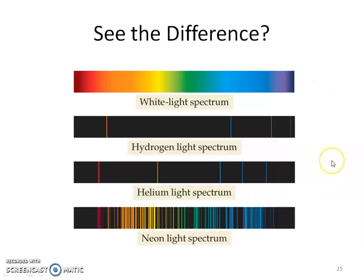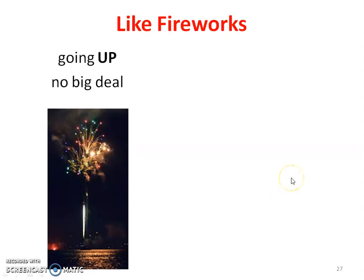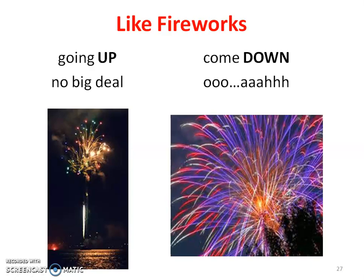How are we getting these different colors? Electrons like to be in their ground state, but when we give them electricity or heat them, they absorb that energy and jump to a higher energy level. The big deal is when they return to their lower energy level — they give us light in the form of color. Those little packets of energy are called photons. It's kind of like fireworks: when they go up it's no big deal, but when they come back down is when you hear the oohs and the ahs.